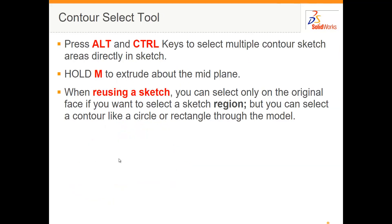If you press the Alt key you can select the area to be extruded directly in the sketch, and if you combine that with the Ctrl key you can select multiple areas. A limitation of the contour select tool is that if you're reusing a sketch you can only select on the original face if you want to pick a region. You may have to turn the model upside down, but you can select a contour like a circular rectangle through the model.